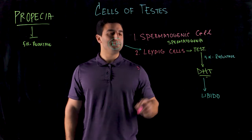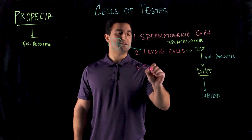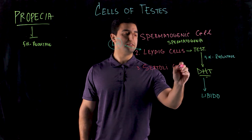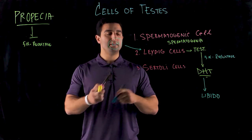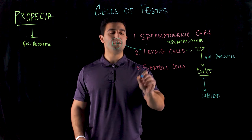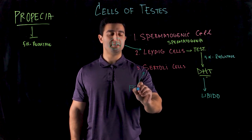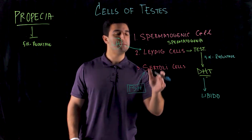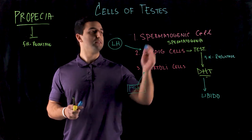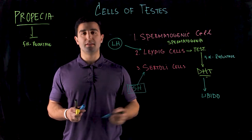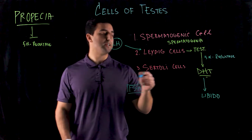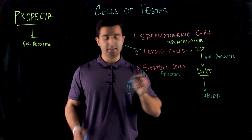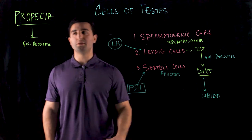The third cell type is the Sertoli cells. Sertoli cells are stimulated by the anterior pituitary hormone FSH — follicle-stimulating hormone. These cell types are responsible for nourishing the sperm. They produce special micronutrients, specifically fructose, which accounts for the high prevalence of fructose in semen.